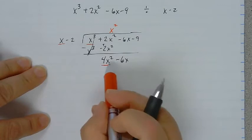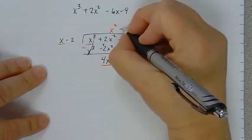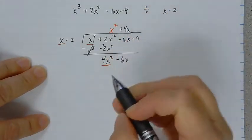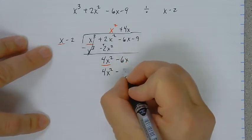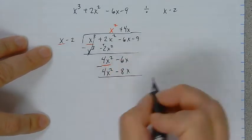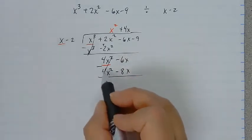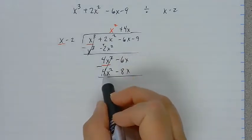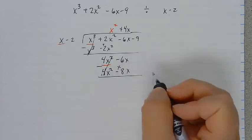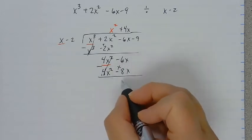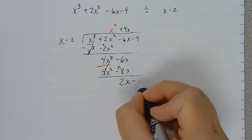What do I take times x to get 4x squared? I need a 4x. So I'm going to write it above the x term. So I get 4x squared minus 8x. And I'm going to subtract. These cancel. I know I'm going to subtract on these because it makes them cancel. Negative 6 subtract negative 8 really becomes plus 8. So negative 6 and plus 8 is 2x. Bring down your next term.